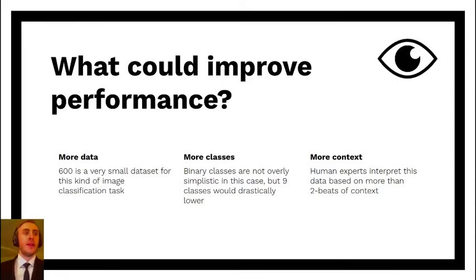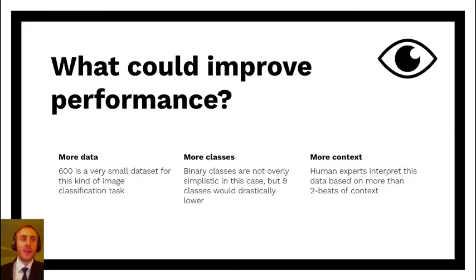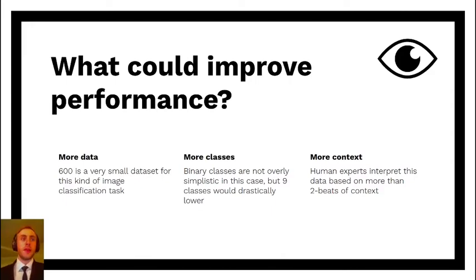So how could the model do better? For one, more data is a really obvious solution. Not only is 600 data points a very small dataset to expect to train an accurate image classifier on, but the fact that the accuracy between 400 and 600 samples improved by 28% suggests that this may well be the most effective way forward. Also, lumping these gears into two broad categories is technically correct as far as the academic analysis is concerned, but the variety within those two classes is huge, so this could be reduced very effectively by breaking the chunks into the much more specific nine classes.